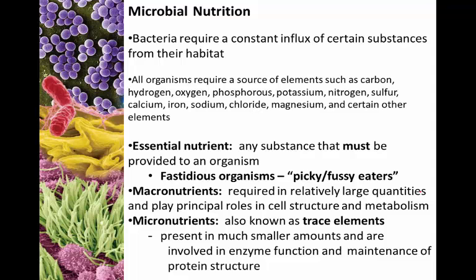Fastidious organisms are a specific group — we think of them as picky or fussy eaters. They have specialized nutrient requirements. For example, an organism that must live in high levels of zinc would be fastidious. It's picky about where it lives because of that zinc requirement.